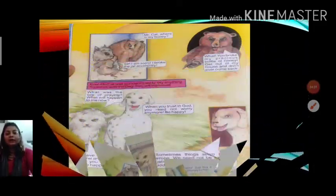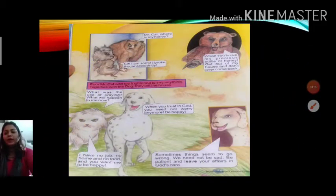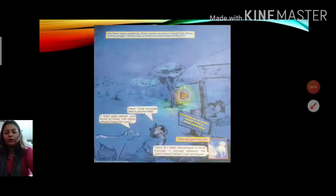Do you know what happened? After that, as they were walking, they came across a small inn deep in the jungle. There was a notice on the door. Mr. Cat said, hey, sounds like a job for me. Dog also said, I told you when you trust in God, He does what's best for you. On the board there was written, looking for a cook with good salary and free body. Now Mr. Cat was very happy and he said, if I had remained in that house, I would always be penniless. Now I can prosper. Prosper means wealthy.